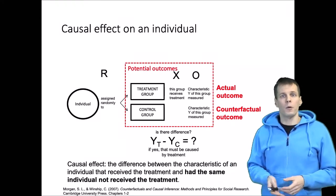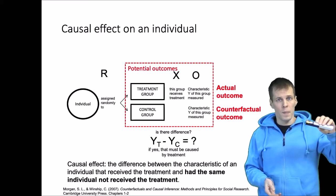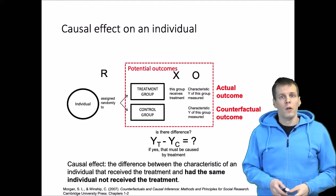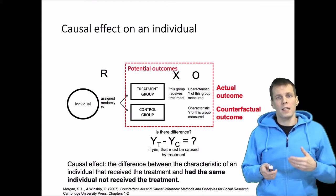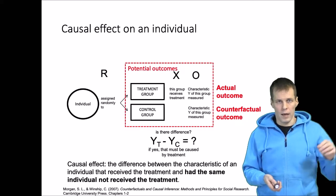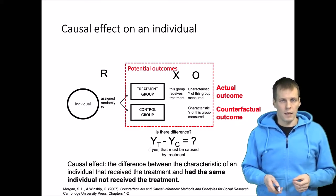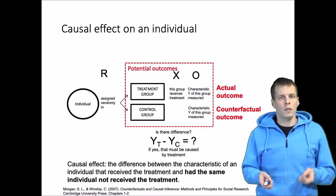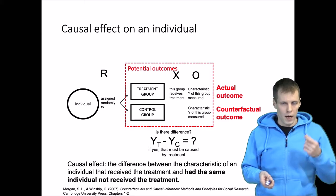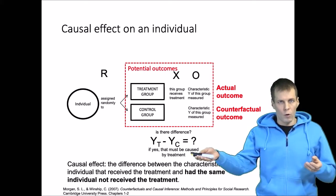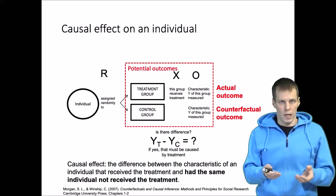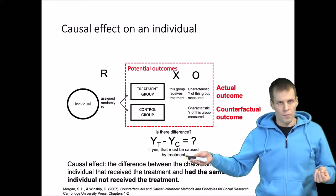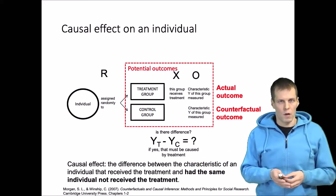For example, if I'm holding a remote and I release my hand, causing it to drop — the regularity theory says that if I open my hand then the remote drops, and that is sufficient for causality. But for the counterfactual model we need to make two claims: the regularity claim — I opened my hand and the remote dropped — and the counterfactual claim — had I not opened my hand, the remote would not have dropped. That's the idea of a counterfactual argument.